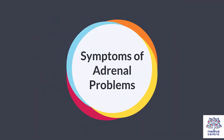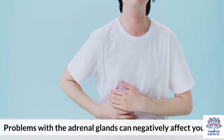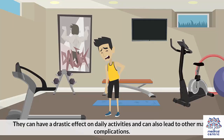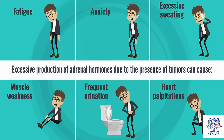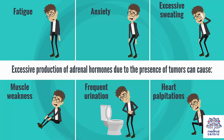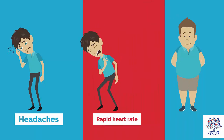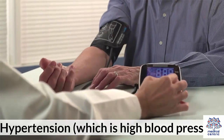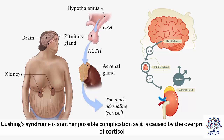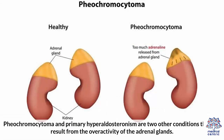Symptoms of Adrenal Problems. Problems with the adrenal glands can negatively affect your life, having a drastic effect on daily activities and leading to other major complications. Excessive production of adrenal hormones due to the presence of tumors can cause: fatigue, anxiety, excessive sweating, muscle weakness, frequent urination, heart palpitations, headaches, rapid heart rate, obesity, and hypertension, also known as high blood pressure. Cushing's syndrome is another possible complication, caused by the overproduction of cortisol. Pheochromocytoma and primary hyperaldosteronism are two other conditions that can result from the overactivity of the adrenal glands.